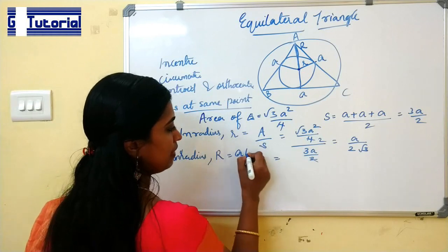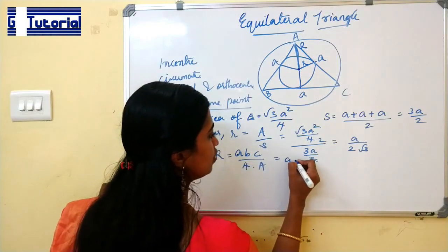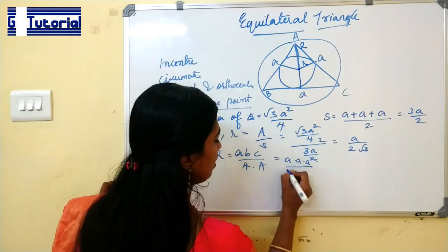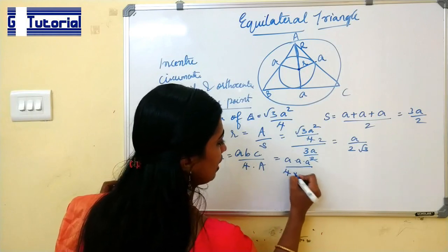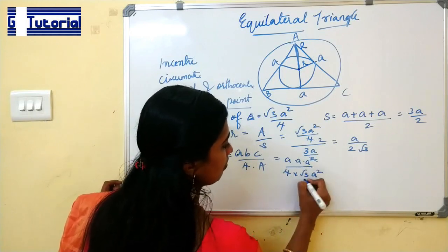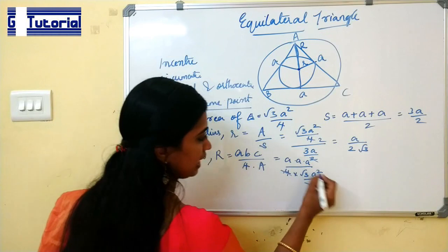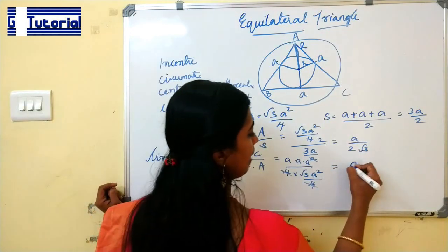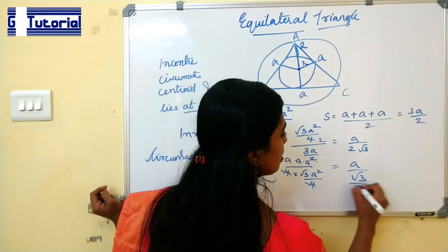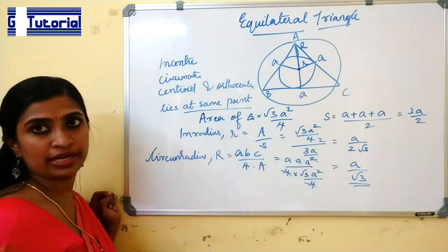For the circumradius, since a, b, c are all equal to a, the formula R = (a × b × c) / (4 × area) gives R = a³ / (4 × √3a² / 4). The 4s cancel and the a² terms cancel, giving circumradius R = a / √3.